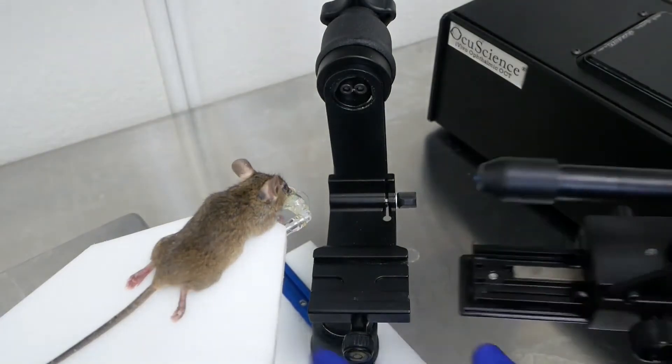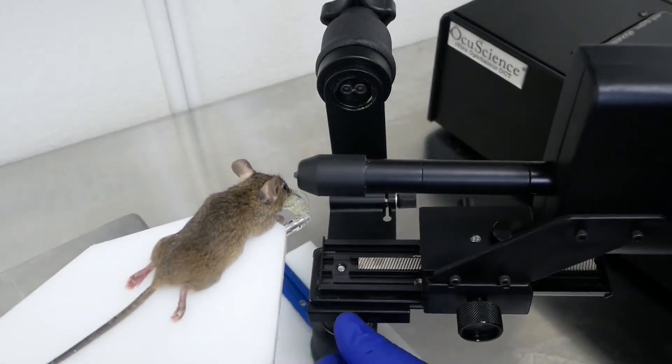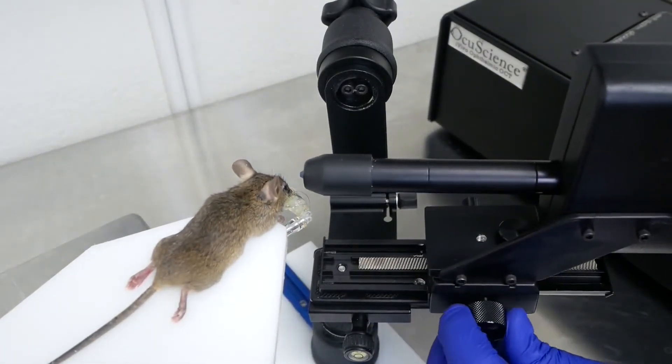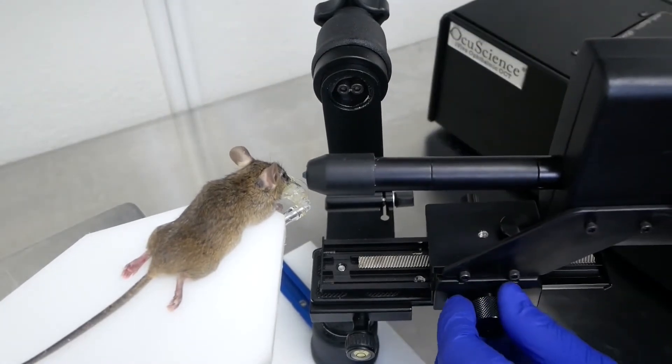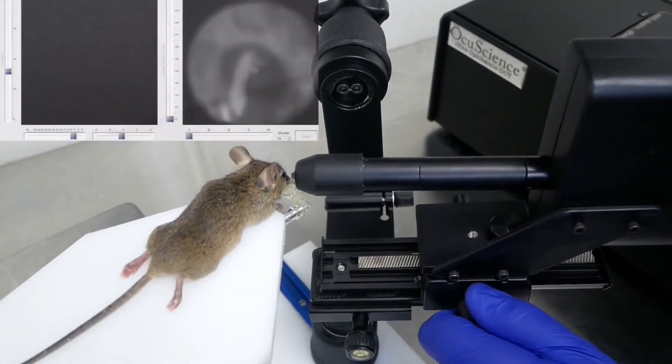The fundascope can be easily removed by sliding it off the rail and swapped with the OCT scanner head on the same rail to seamlessly transition into alternative imaging of the same eye and positioning.